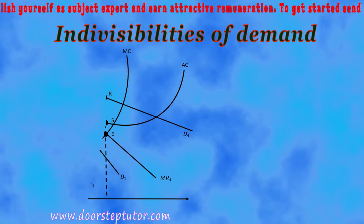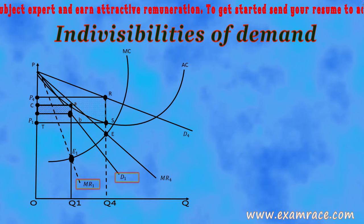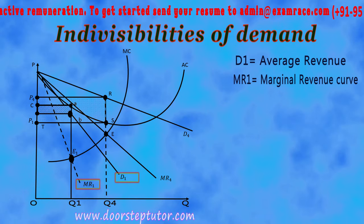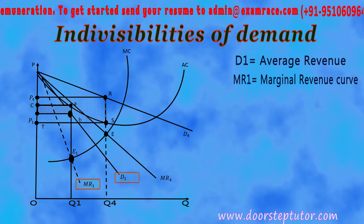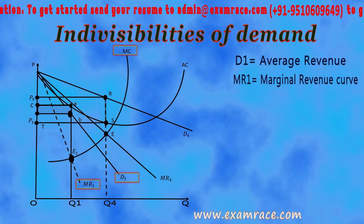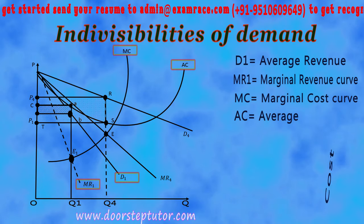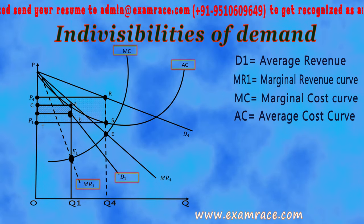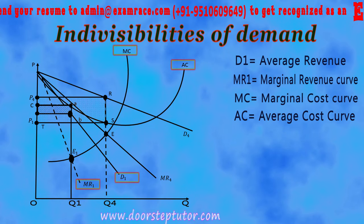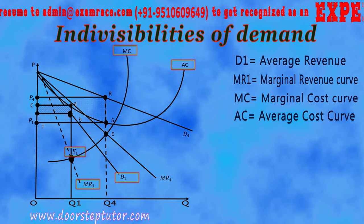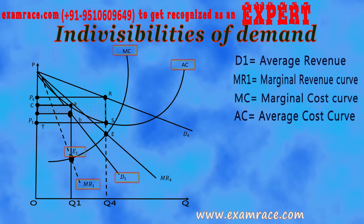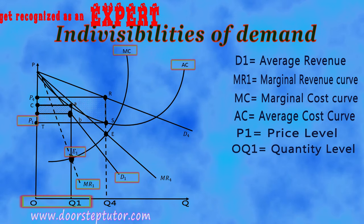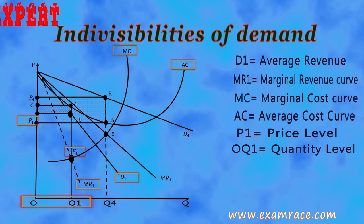To understand this with a graph: D1 is the average revenue or demand curve, and MR1 is the marginal revenue curve. We also have MC (marginal cost curve) and AC (average cost curve). Equilibrium is established where MC and MR are equal — where MC cuts MR1 at point E1. Corresponding to that, we have price level P1 and quantity level OQ1.